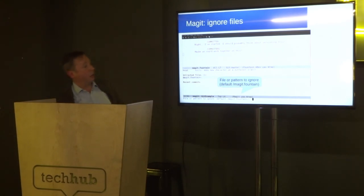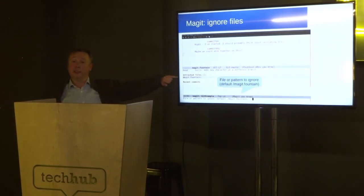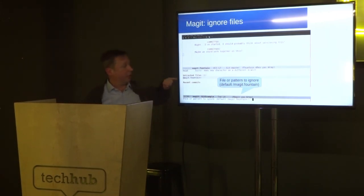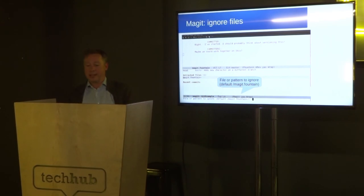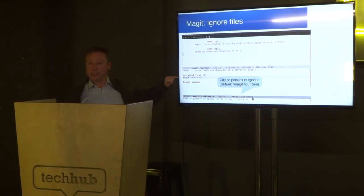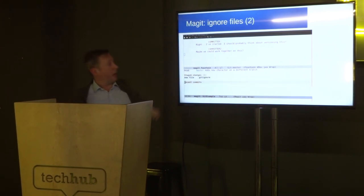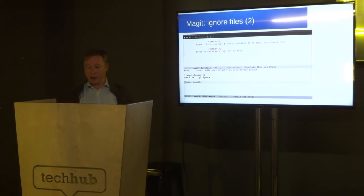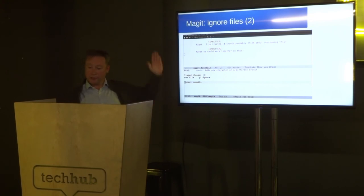We've got that annoying magic.fountain tilde file — the backup of the file I'm editing — which I don't want to stage. Just as with regular Git, you have your .gitignore. Instead of staging this file, I put my cursor on it and select it with I. That will create the .gitignore and add that file to it. If the .gitignore isn't there, it'll create it; otherwise it will add the file to the existing one.